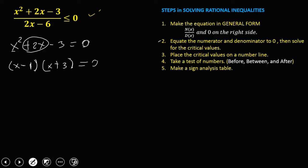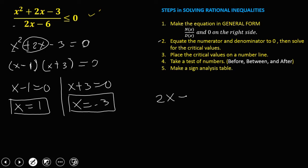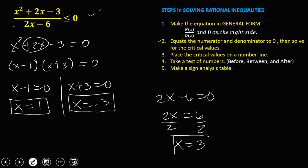Solving for x: x minus 1 equals 0, so x is positive 1. And x plus 3 equals 0, so x is negative 3. Then for the denominator, 2x minus 6 equals 0, so 2x equals 6, divide by 2, and x is positive 3. These are the critical values.